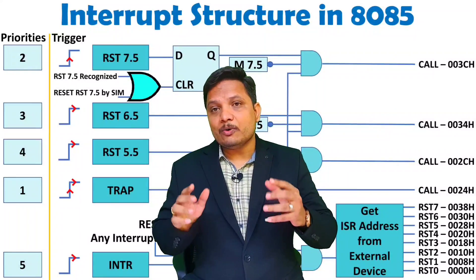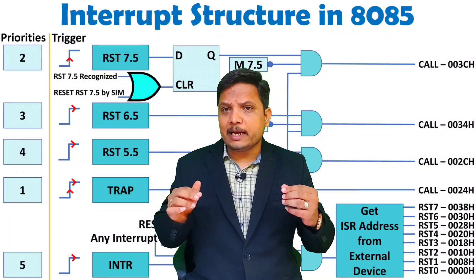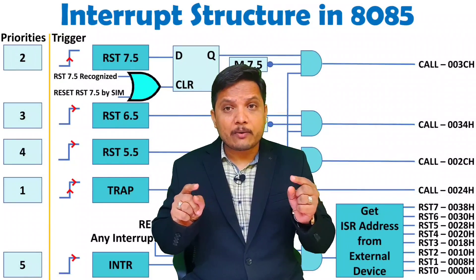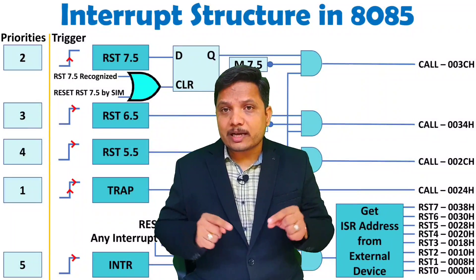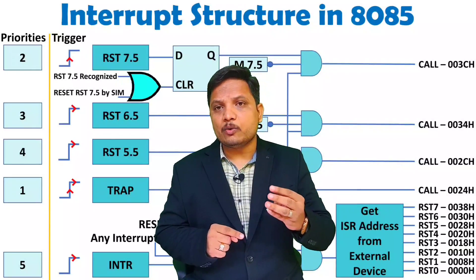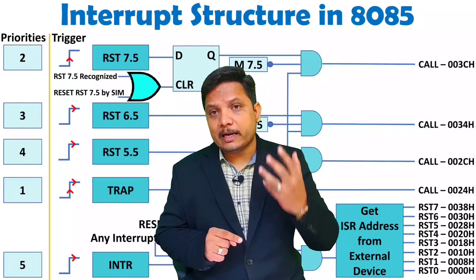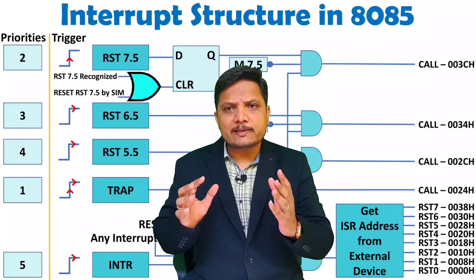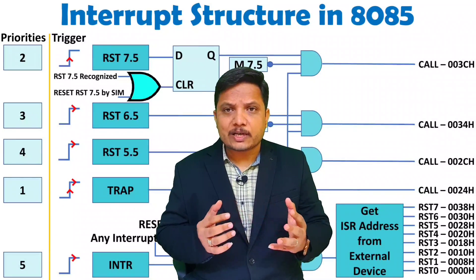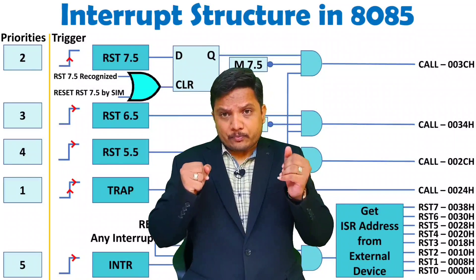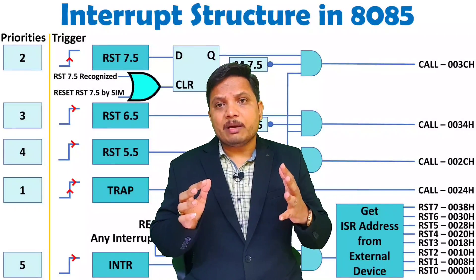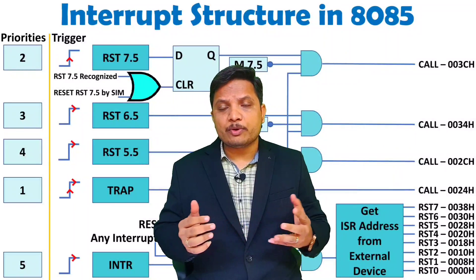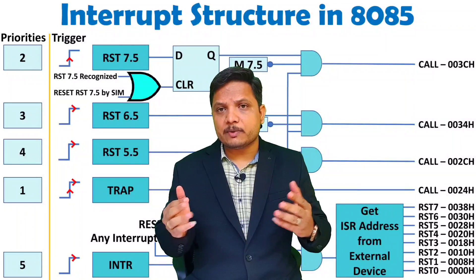I think it is now clear how we can execute any interrupt in microprocessor 8085. If you have any confusion, post it in the comment box. I have made a total of 5 videos based on 8085 interrupts in which small but essential details are explained. Based on those you can understand how exactly interrupt execution happens inside the microprocessor. I hope you have understood this. Thank you so much for watching this video.